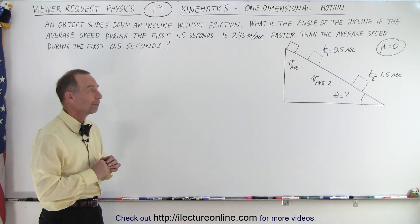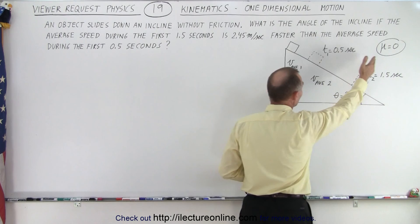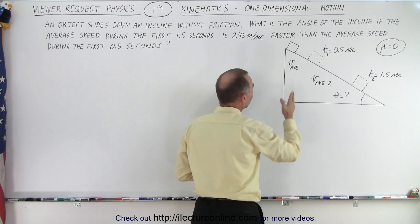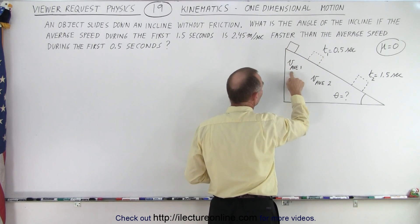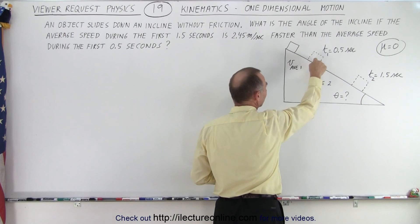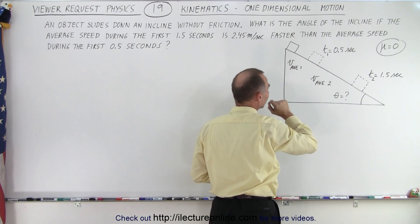That's kind of interesting. So imagine we start at the top of an incline, the incline has no friction, it has an unknown angle. But we are told that if we calculate the average velocity for the first half second, after one half second the object gets to this point, so we'll have an average velocity during the first half a second.